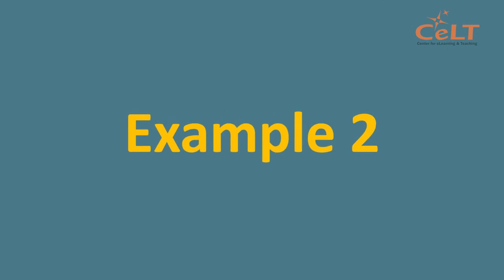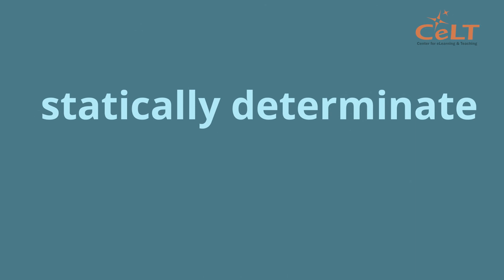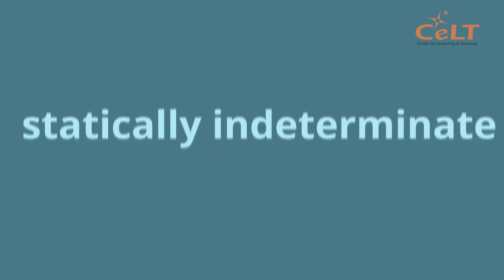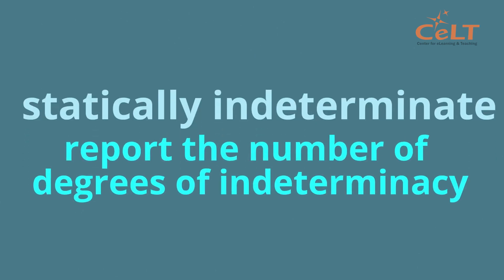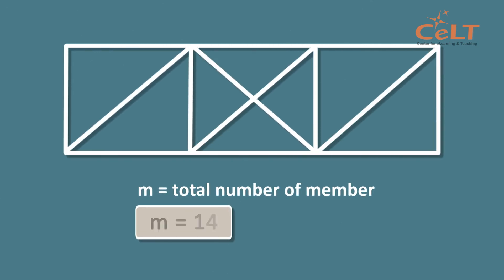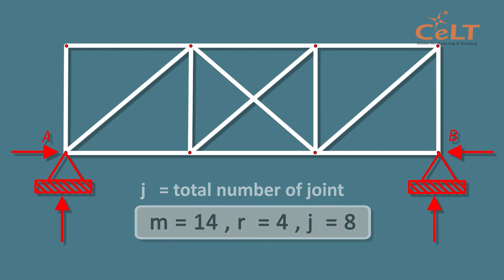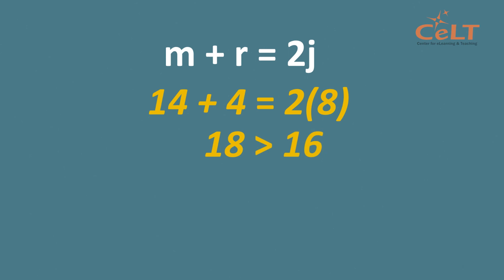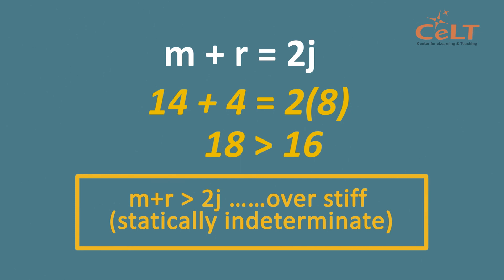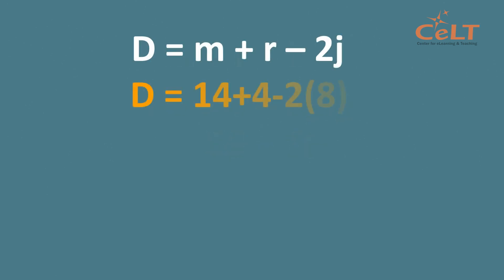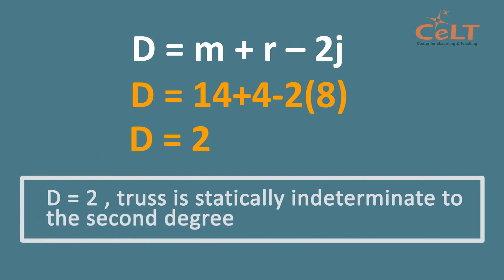Now let's look at Example 2. Classify the truss as statically determinate or statically indeterminate. If it is statically indeterminate, report the number of degrees of indeterminacy. From the diagram, the total number of members is 14, total reactions is 4, and total joints is 8. Substituting into the formula, M plus R is more than 2J. Therefore, the truss is over stiff, which is statically indeterminate. Calculating the degree of indeterminacy using D equals M plus R minus 2J, we find that D equals 2. Therefore, the truss is statically indeterminate to the second degree.